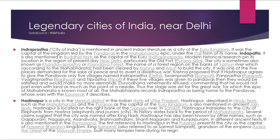Hastinapur is a city in Meerut district in the Indian state of Uttar Pradesh. Hindu texts such as the Mahabharata and the Puranas describe it as the capital of the Kuru kingdom. It is also mentioned in ancient Jain texts. Hastinapur is located on the right bank of the Ganges river. The name translates from Sanskrit as 'city of the elephants' — from 'Hastina' and 'Puram' (city). It was also known by other names such as Gajpuram, Nagpuram, Asandivat, Brahmasthalam, Shantinagaram, and Kunjarpuram in different ancient texts, and is also mentioned in the Ramayana. The first reference in the Puranas presents Hastinapur as the capital of Emperor Bharat's kingdom. King Samprati, grandson of Emperor Ashoka of the Mauryan Empire, built many temples there.